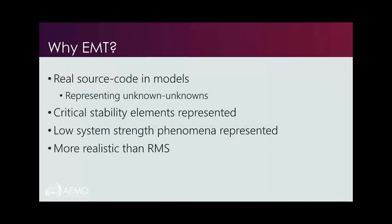So, why do we use electromagnetic transient models? They allow us to use the real source code in models — manufacturers take the code used on actual inverters in the field, put a wrapper around it, and give it to us for our modelling programs. We have the exact same code as in real inverters, meaning we can represent basically any unknowns, model the plant exactly as it operates in the real world, and model critical stability elements around low system strength. It gives us a more realistic view than RMS simulations. EMT is not better or worse than RMS — it's a different tool that solves different problems.